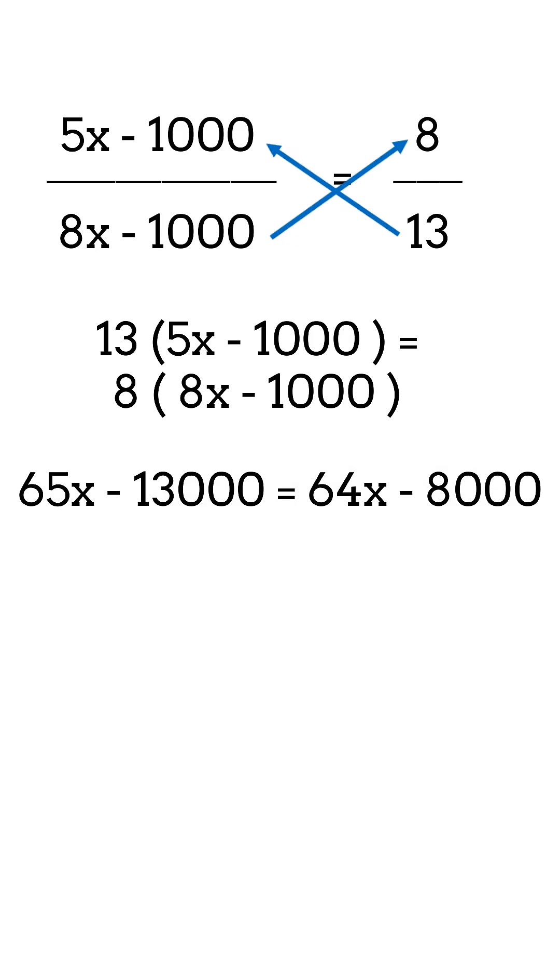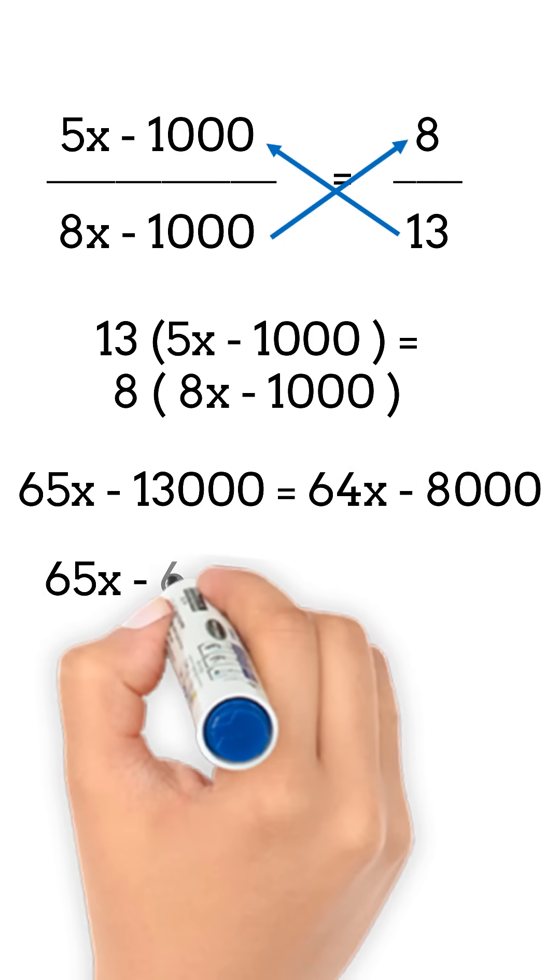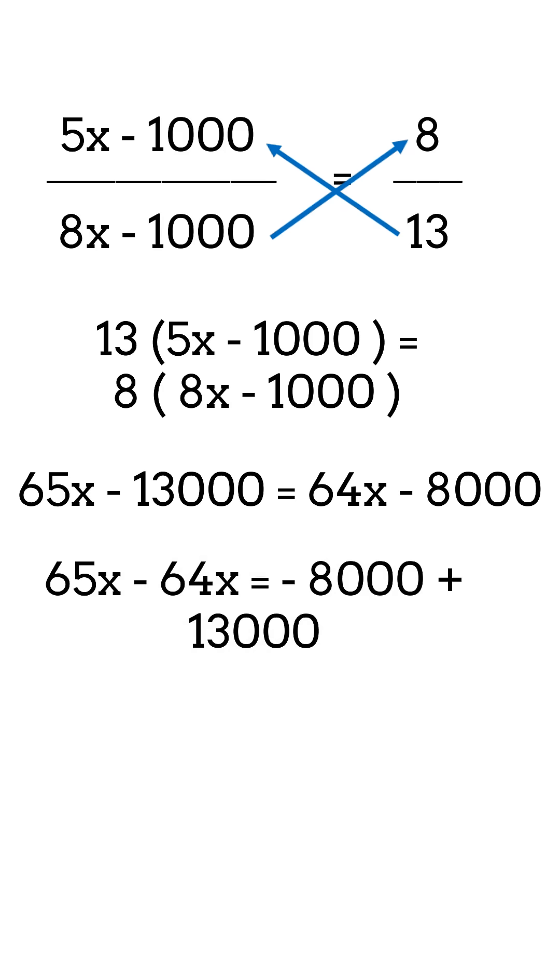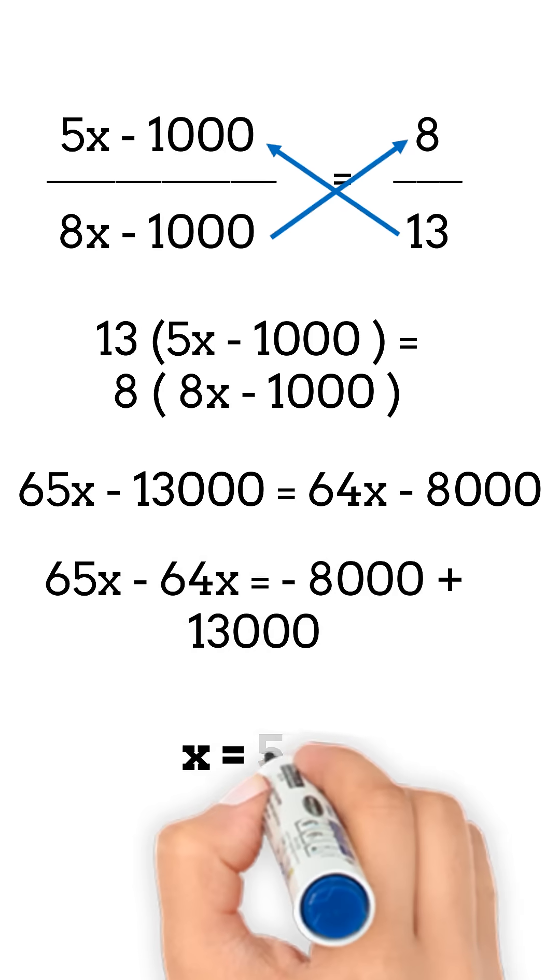By transposing, 65x minus 64x equals minus 8,000 plus 13,000. Therefore, x equals 5,000.